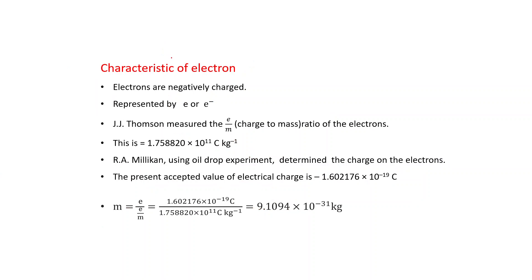What are the characteristics of electron? Electrons are negatively charged, represented by E or E minus. J.J. Thompson measured the E by M, that is charge to mass ratio, E for charge and M for mass of electron. And this is 1.758820 into 10 raised to the power 11 Coulomb per kilogram. Another scientist, R.A. Millikan, using oil drop experiment, determined the charge on the electrons.